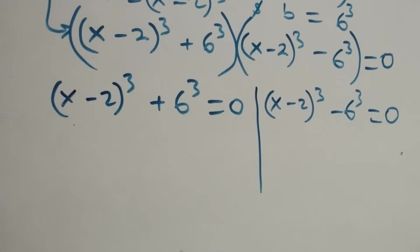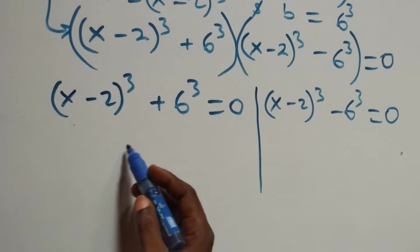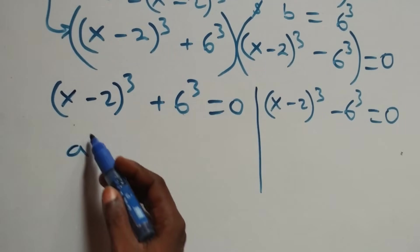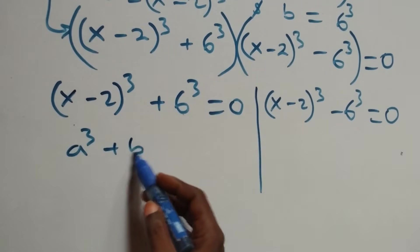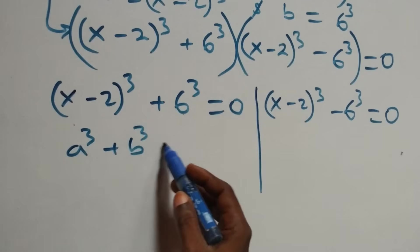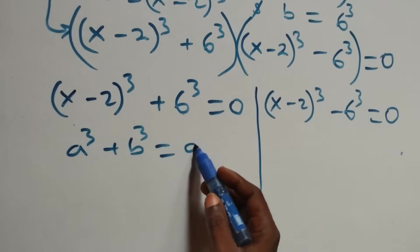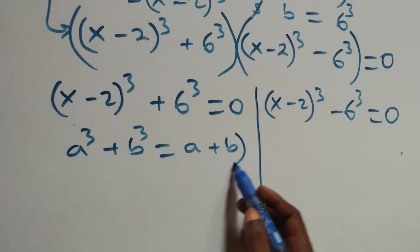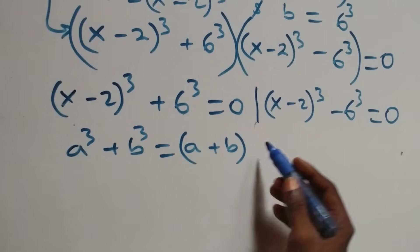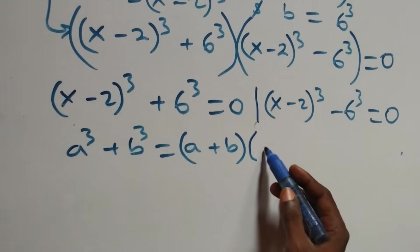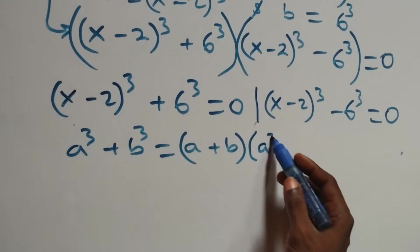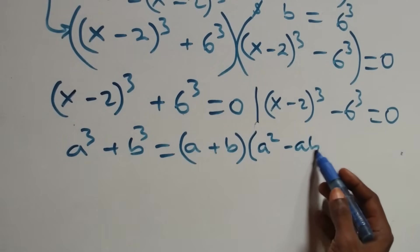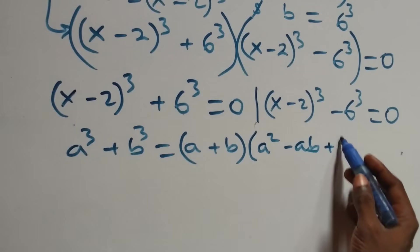Solving the first case, this follows the sum of cubes formula: a cubed plus b cubed equals a plus b into bracket, then open bracket a squared minus ab plus b squared.